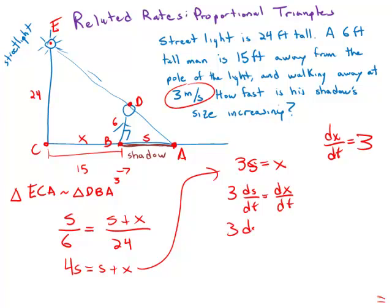And so we have 3 dS/dt equals 3, or dS/dt equals 1. The man's shadow is getting longer by 1 foot per second.